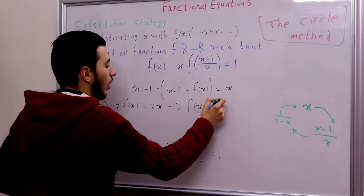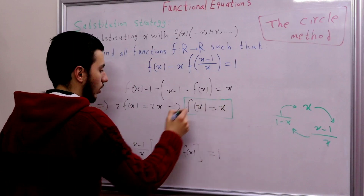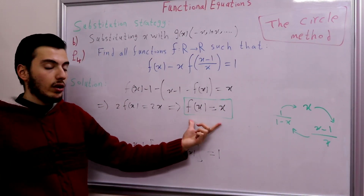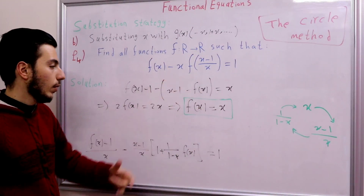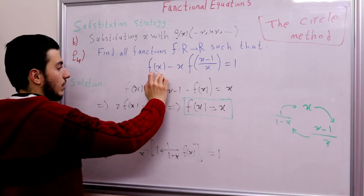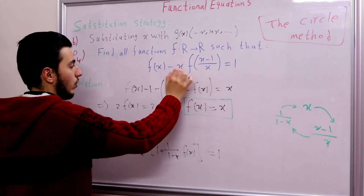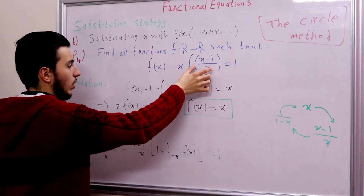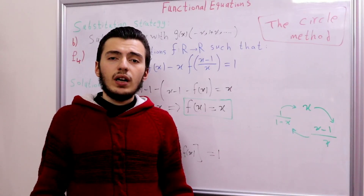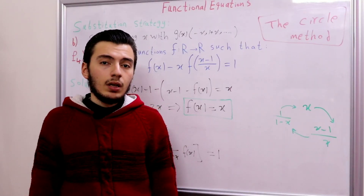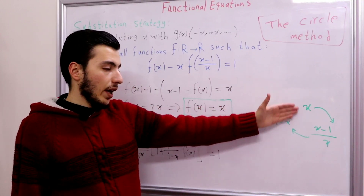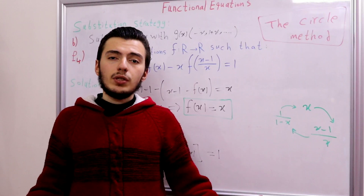So we have the identity function. Let's verify: substituting f(x) = x into the original equation, x minus x times (x minus 1 over x) equals x minus (x minus 1) equals 1. That is true, so we are done. The idea of the circle method is simple: start with x and keep substituting until you reach x again, and when you do, your problem is solved.